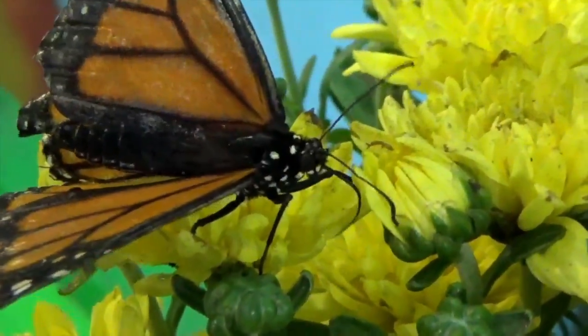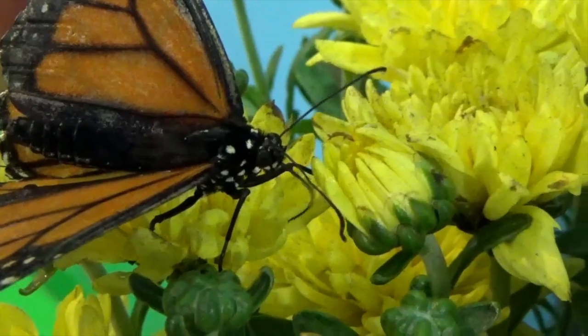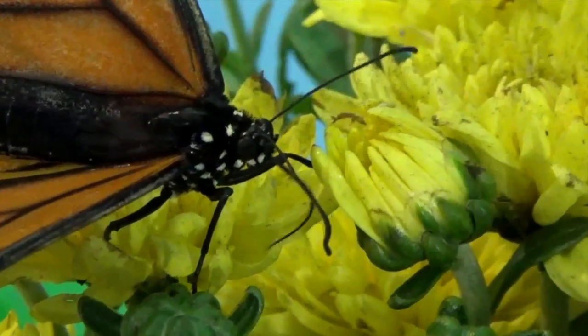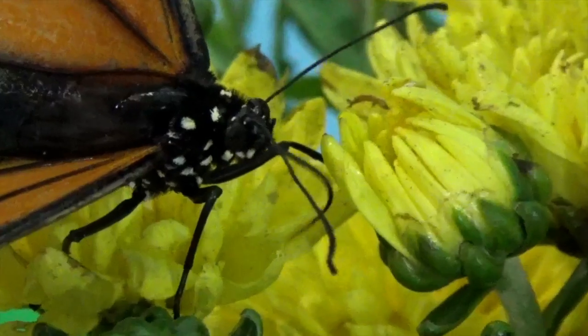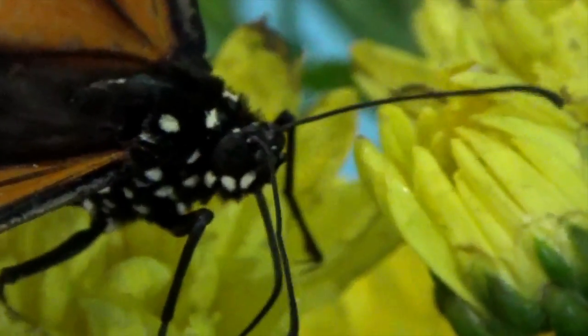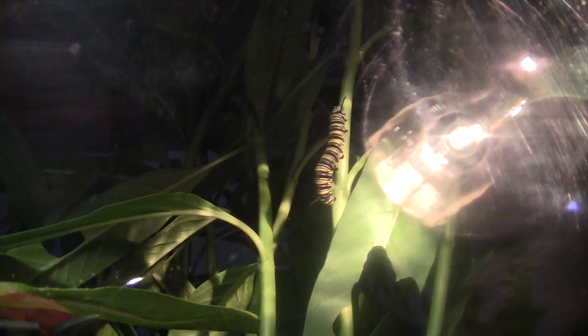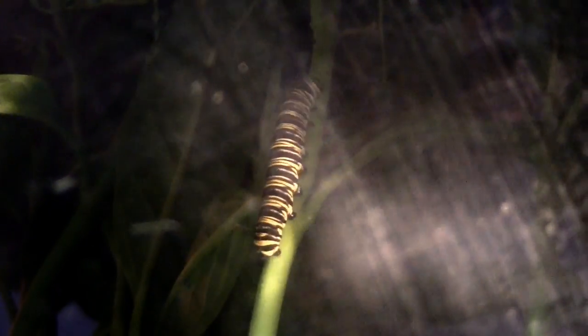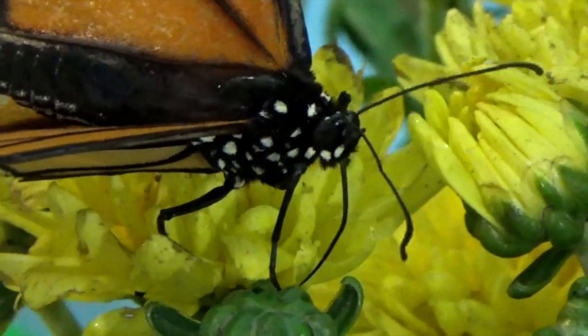Boys and girls, let's see what this monarch butterfly looked like before it became a beautiful butterfly. There are four stages of the monarch butterfly's life cycle. First there's the egg, second the caterpillar, third the chrysalis, and then the adult butterfly.